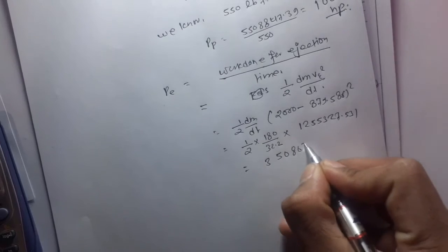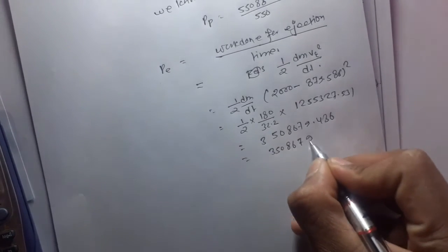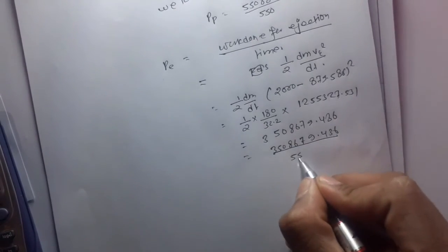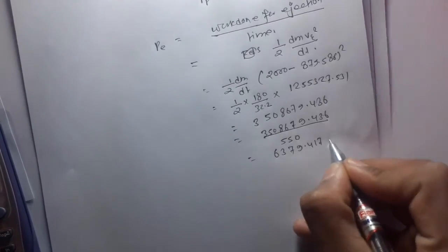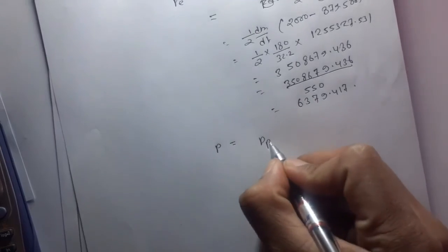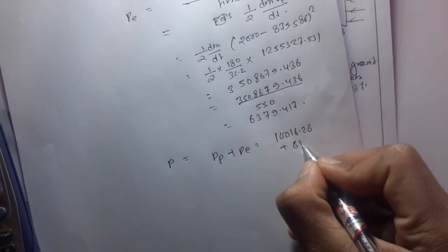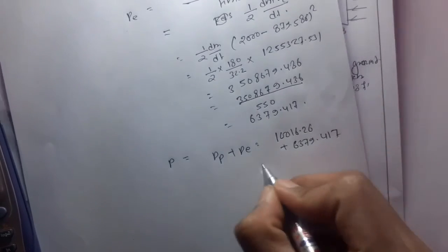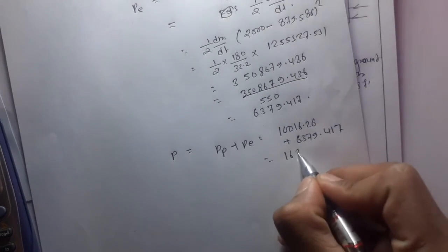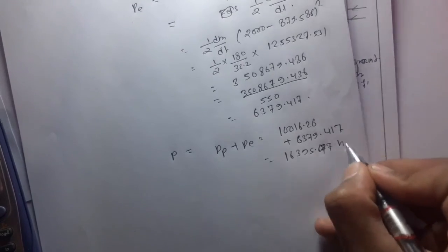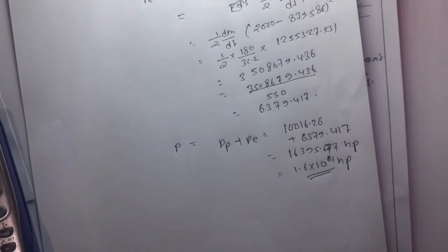Now changing into horsepower, this is 3,508,679.436 divided by 550, which equals 6379.417 horsepower. Now the total power is given by PP plus PE, so PP is 10,016.26 plus PE is 6379.417, which equals 16,395.677 horsepower. So this is 1.6 times 10 to the power 4 horsepower. This is the required answer to this question.